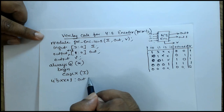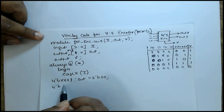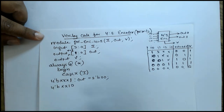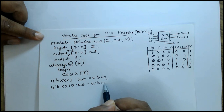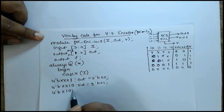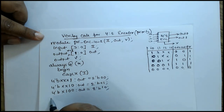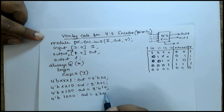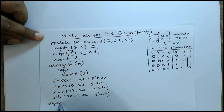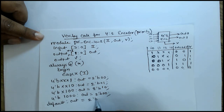When i0 is 1 and the rest unknown, output is assigned 2'b00. For 4'bxx10 — i1 is 1, i0 is 0 — output is assigned 2'b01. Similarly, 4'bx100 — i0 and i1 are 0, i2 is 1, i3 unknown — output is 2'b10. Next is 4'b1000, output is 2'b11. Default case is optional; I'll cover it and assign output as 2'b00.